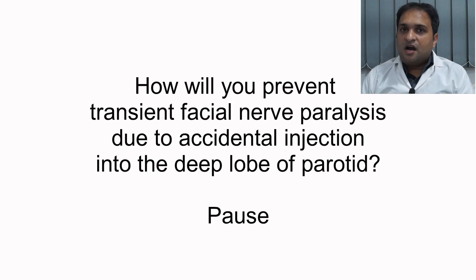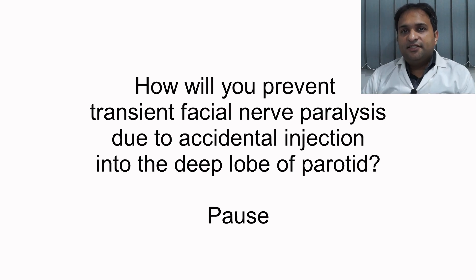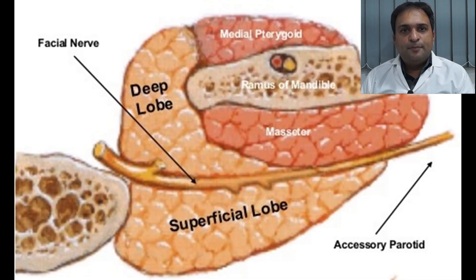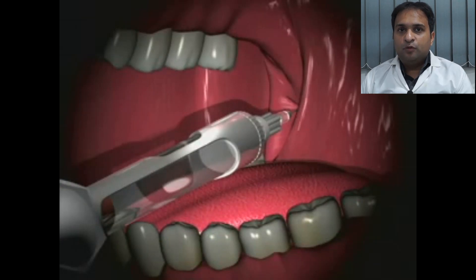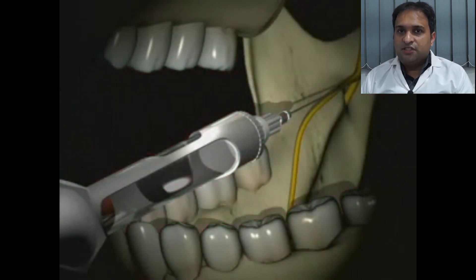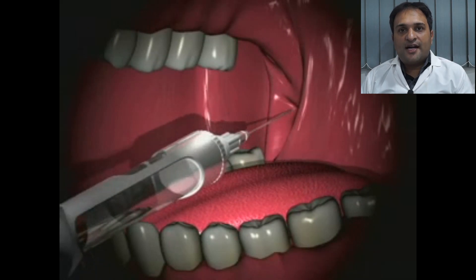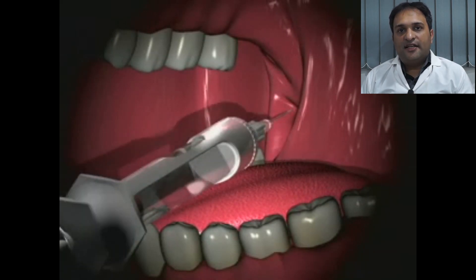How can you prevent transient facial nerve paralysis by accidental injection into the deeper lobe of the parotid? The deep lobe of the parotid forms the posterior border of the pterygomandibular space. The needle enters the deep lobe when directed too far posteriorly during the inferior alveolar nerve block. To prevent this, the syringe must be withdrawn and redirected more laterally toward the contralateral side to reach the target area.